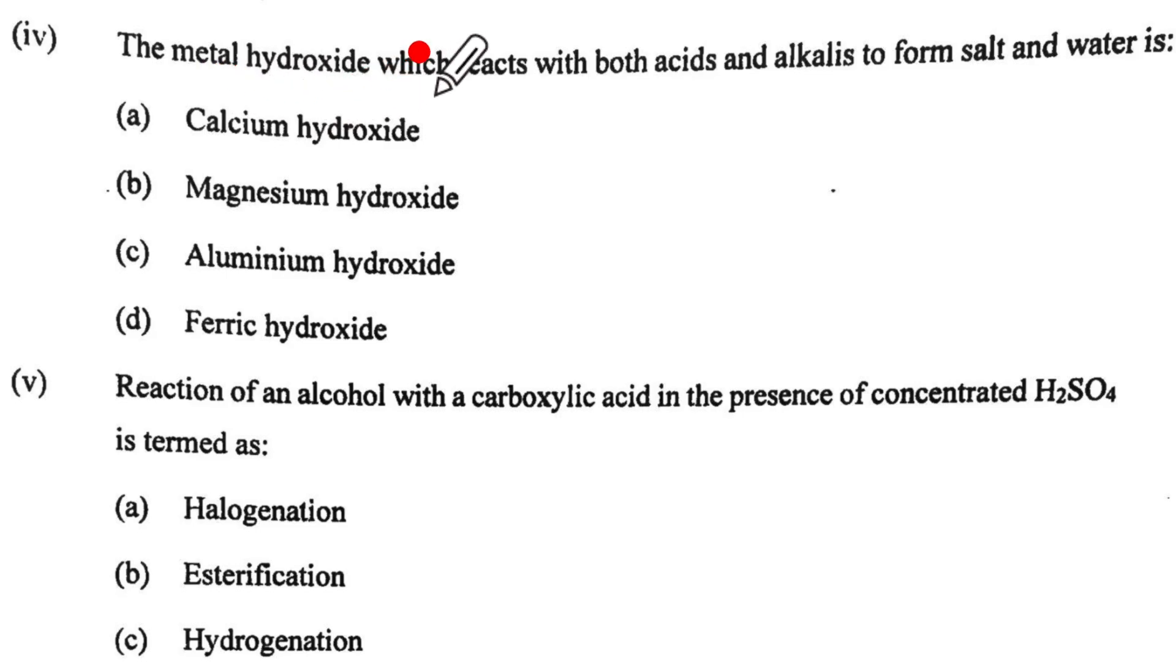The fourth one, metal hydroxide which reacts with both acids and alkalis to form salt and water will be amphoteric in nature which means it will be Zn, Al or Pb. Which one is that? Here. So fourth one is C option.